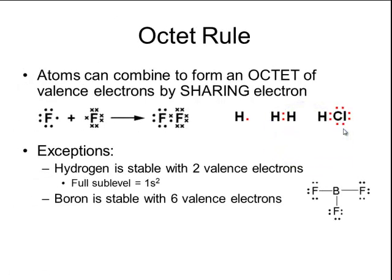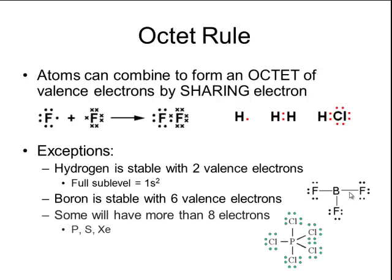Another exception to the octet rule is boron. Boron is stable with six valence electrons. In the diagram, a boron molecule will often have three dashes surrounding it, where each dash represents two electrons — so two, four, six total electrons around a boron atom. It is also possible for some elements to have more than eight electrons; these elements include phosphorus, sulfur, and even xenon, which will often combine together to have 10 or even 12 electrons surrounding them.